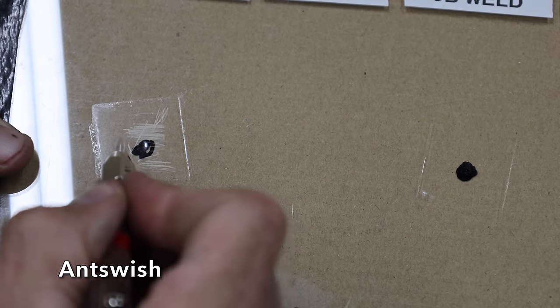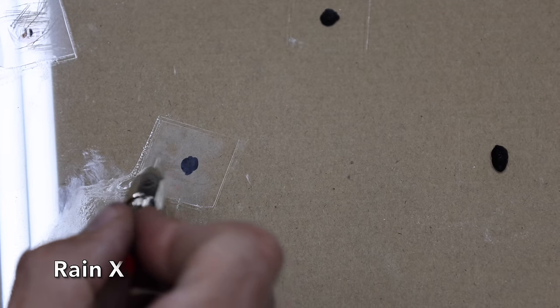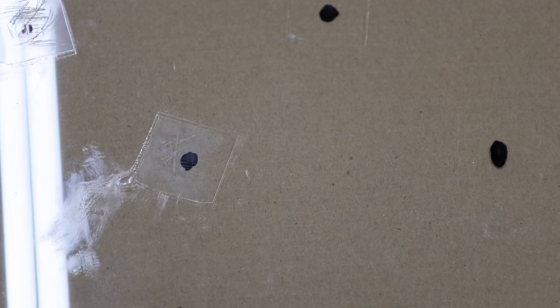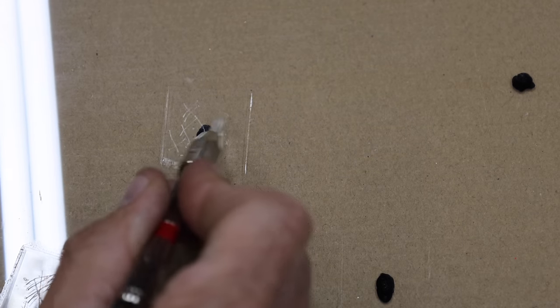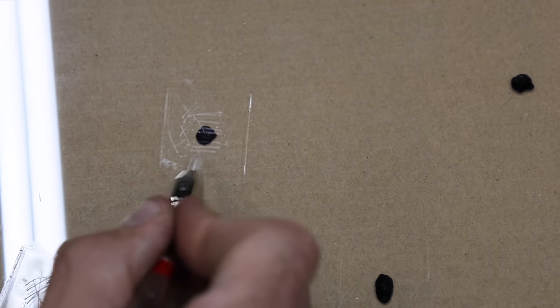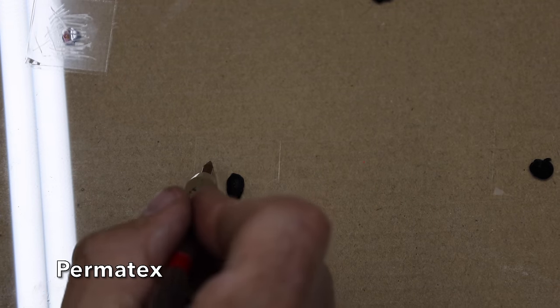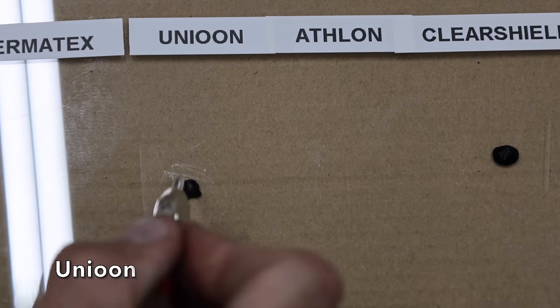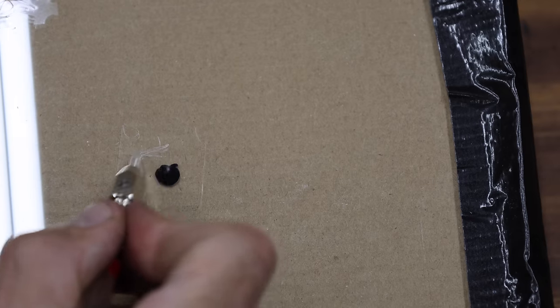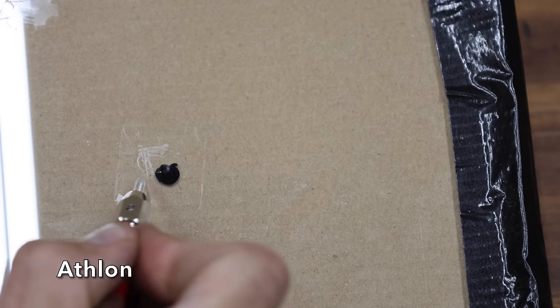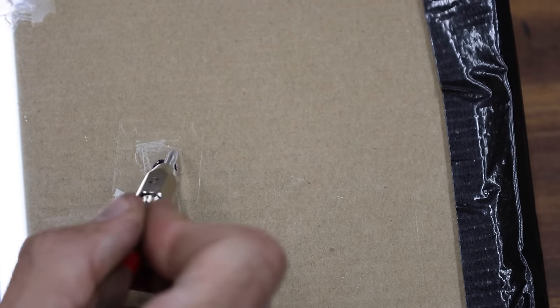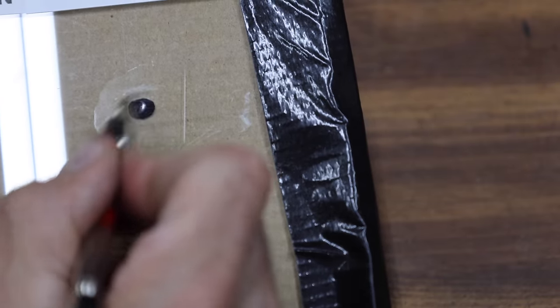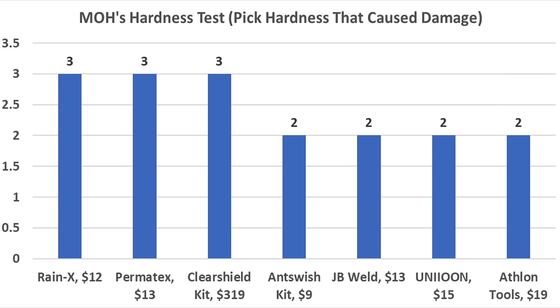And the number two pick easily scratched the Antwish. And the Rain-X held up just fine to the number two pick. And the number three pick is harder than the number two, and it caused quite a bit of damage. And the JB Weld seems a little bit harder than the Antwish, but it did experience some damage with the number two pick. And the Permatex outlasted the number two pick. And the number three pick did cause some damage to the Permatex. And the Union is very soft and experienced quite a bit of damage from the number two pick. Just like the Union, the Athlon is extremely soft and experienced a lot of damage from the number two pick. And the ClearShield held up just fine to the number two pick, but the number three pick did cause some damage.